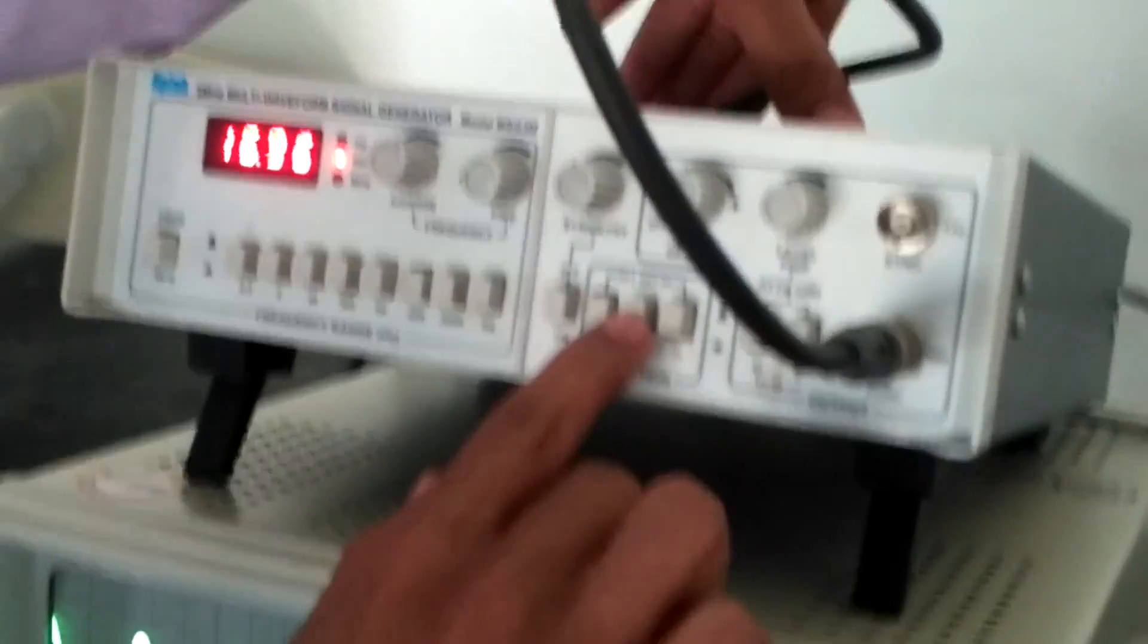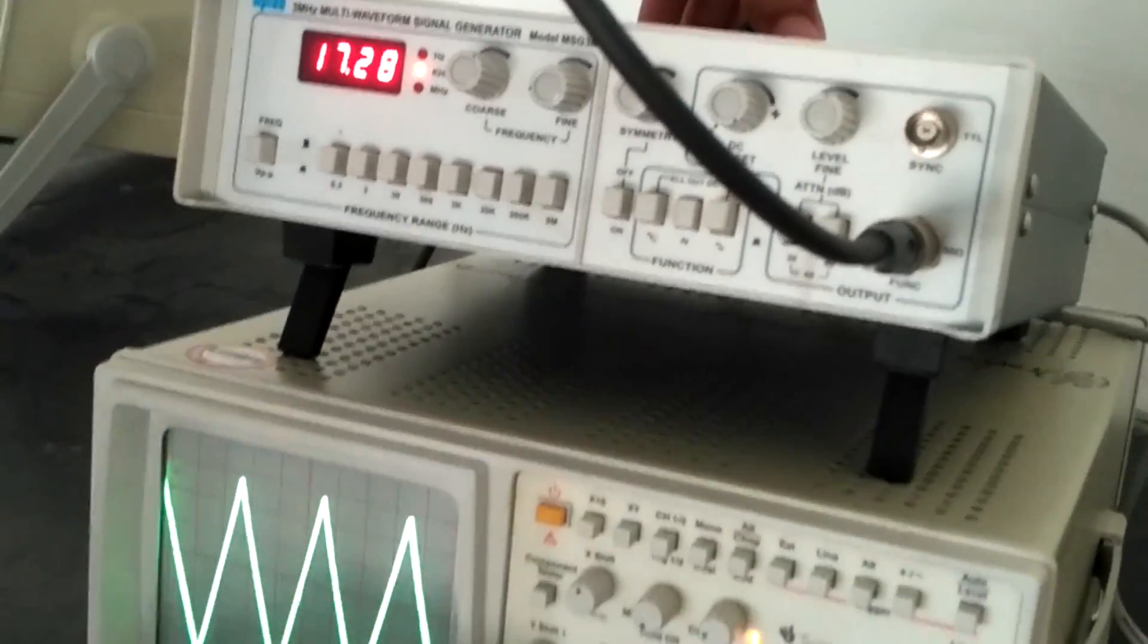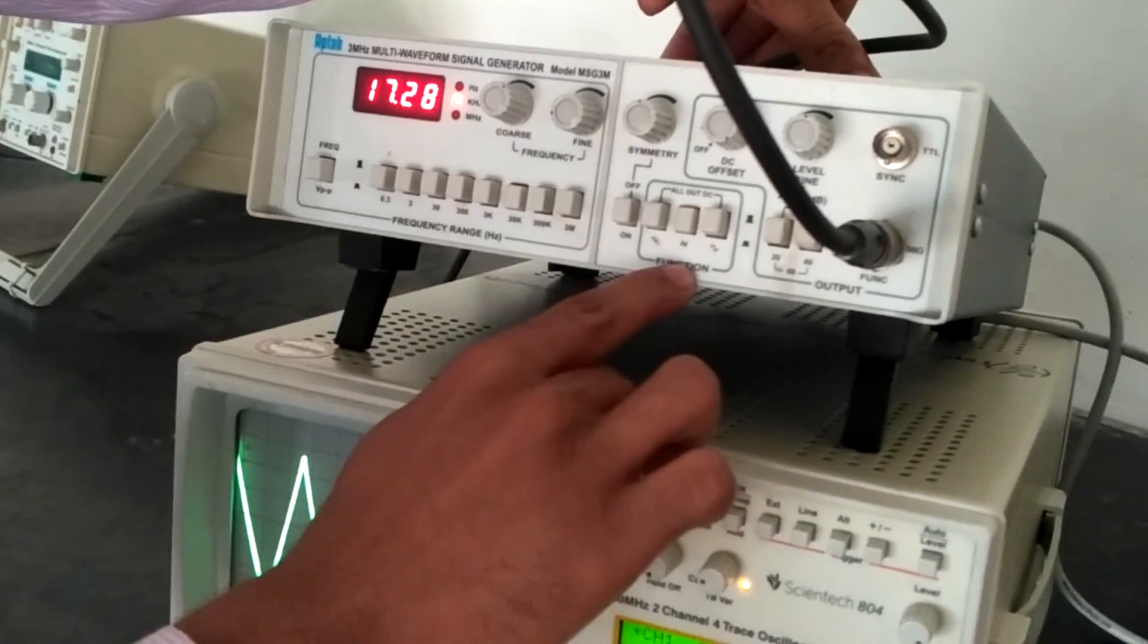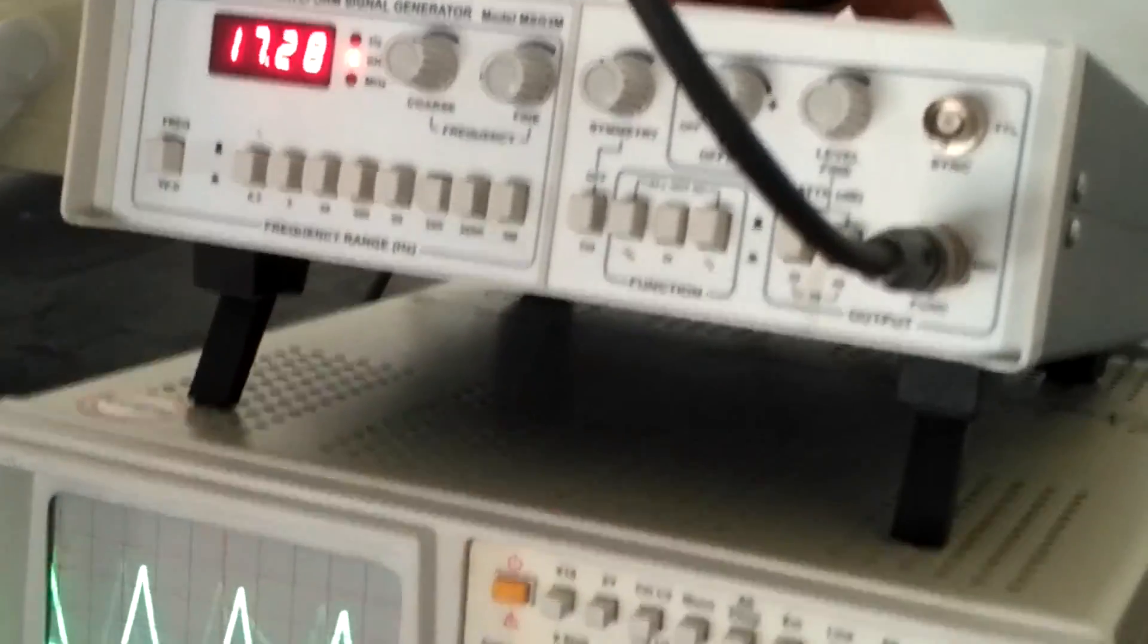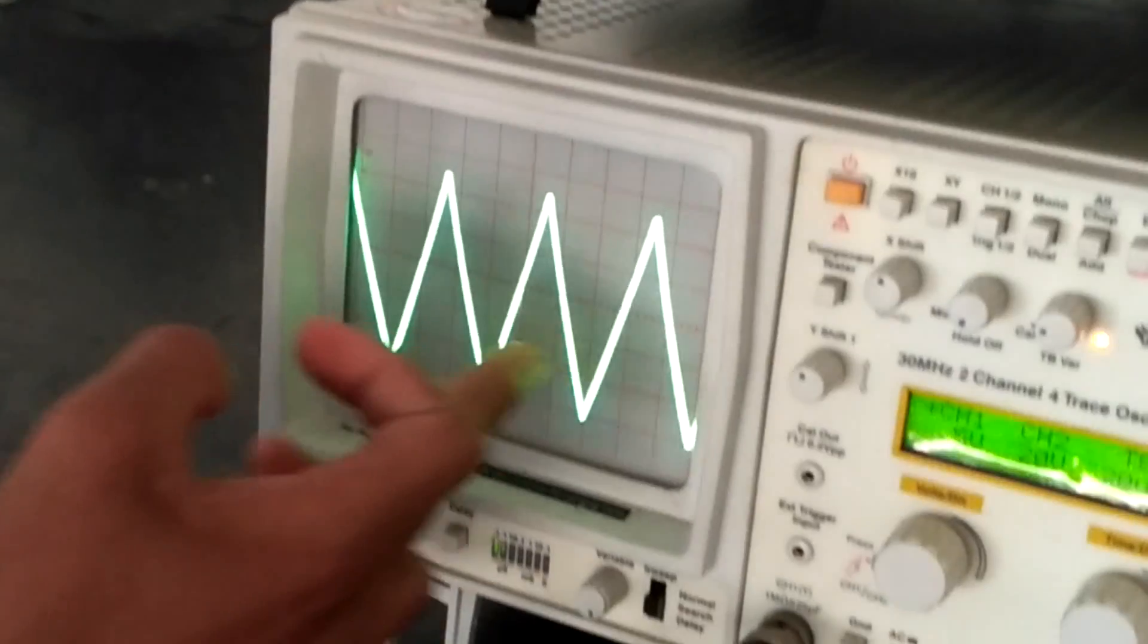In the same way we can get the triangle waveform by switching the mode of function generator to triangle waveform. As we can see, this is the triangle waveform. In the same way we can get a square waveform as well.